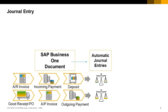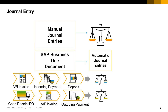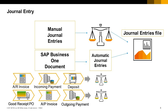In SAP Business One, a journal entry is automatically posted from many documents, such as AR and AP invoices. Additionally, you can manually post a journal entry directly to a GL account or to a business partner subledger account. All journal entries are posted to one file in SAP Business One: the journal entries file.